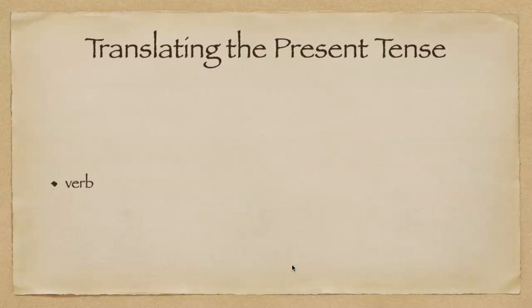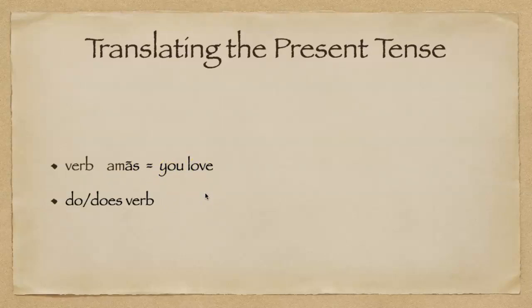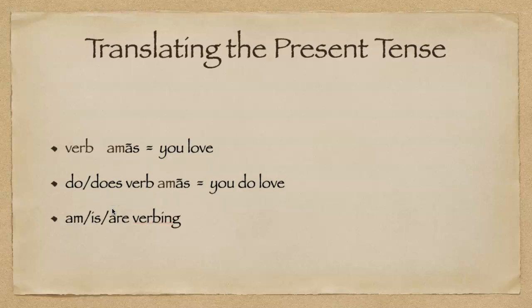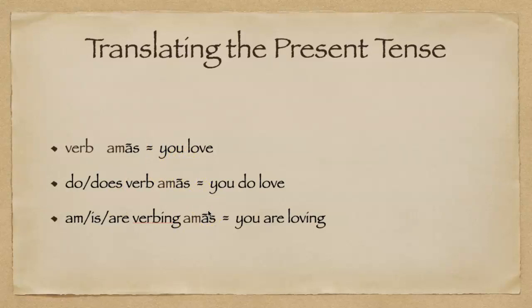Remember, there are three different ways to translate the present tense into English because English has three versions. The simplest is just the verb — so 'amas' would be 'you love.' Another way is do/does + verb: 'you do love.' And lastly, am/is/are + verbing: 'amas' becomes 'you are loving.' When translating for conjugation purposes, the simplest form is probably what you'll want to use, but for translating sentences and paragraphs, the other two might be more appropriate.